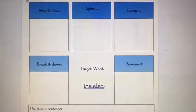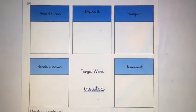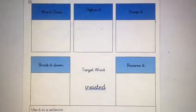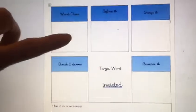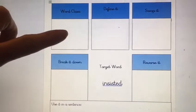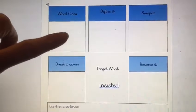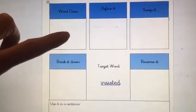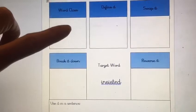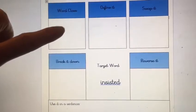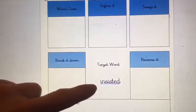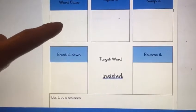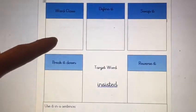Let's briefly recap how we complete our vocabulary laboratory. We have got our word class. Here we think about, is our word a noun, a verb, an adjective or an adverb? So is insisted a noun, verb, adjective or adverb?